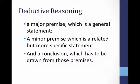With deductive reasoning, you have a major premise — which is a general statement — and then a minor premise, which is a related but more specific statement. Typically you have that major premise and then minor premises that follow, and then a conclusion drawn from those premises. Most of us have a tendency to write this way; we just don't realize we're doing it.